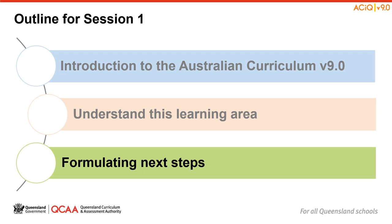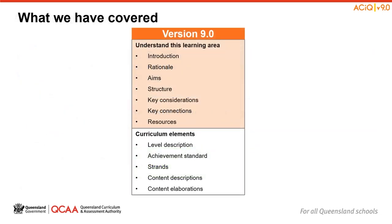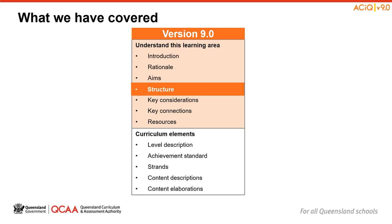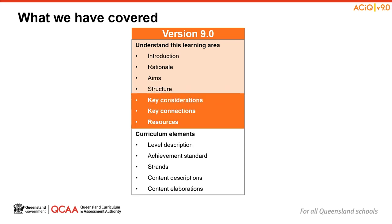Now that we have unpacked the Understand This Learning Area information, let's take a moment to recap what we have done in this first session, so that you can consider your next steps in the transition to Version 9 of the Mathematics curriculum. We have considered the intent of the curriculum by reviewing the introduction, rationale and aims. Next, we examined the structural changes for mathematics. Finally, we reflected on some new elements to the curriculum by reviewing the key considerations, key connections and resources associated with mathematics.